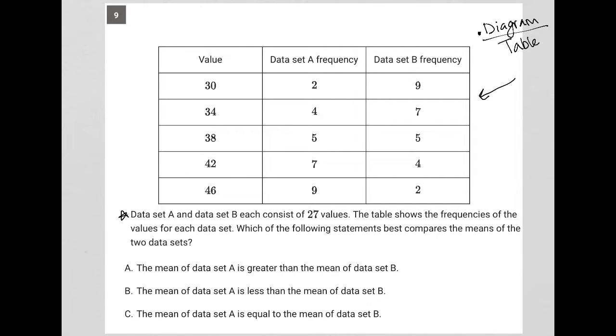The data here shows the first column is titled value, so these are the values that I have. The second column is data set A frequency, so this is the frequency of those values within data set A. And then I have the frequency of those same data values within data set B.